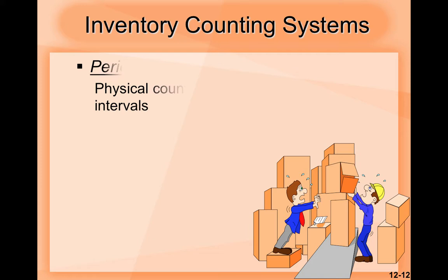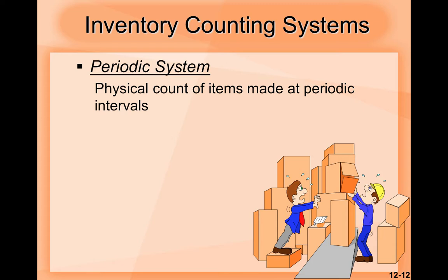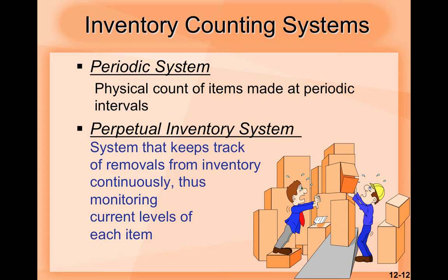Looking at inventory counting systems: the first is a periodic system — a physical count of items made at periodic intervals. The second is a perpetual inventory system, which keeps track of removals from inventory continuously through monitoring current levels of each item. The periodic system is like the old-fashioned way, counting physically every week or every month. The perpetual inventory system could be a software or any kind of system that keeps track of removals.